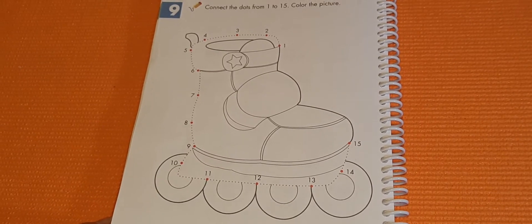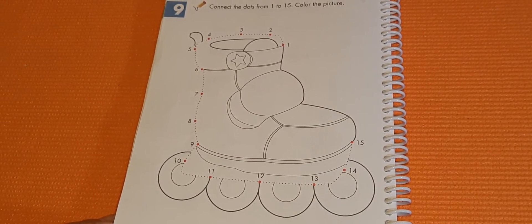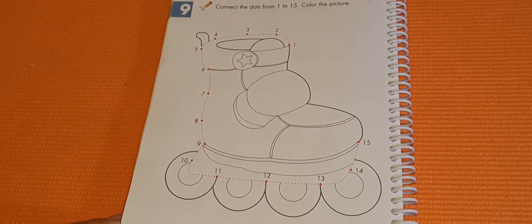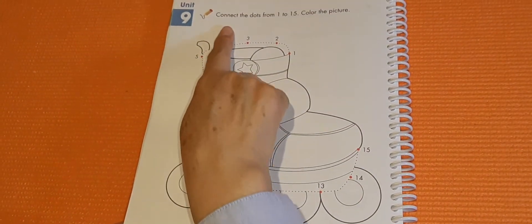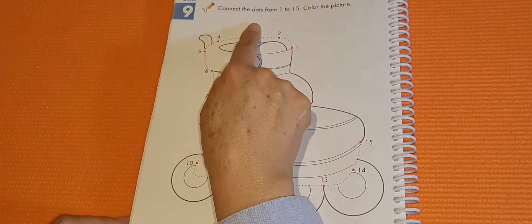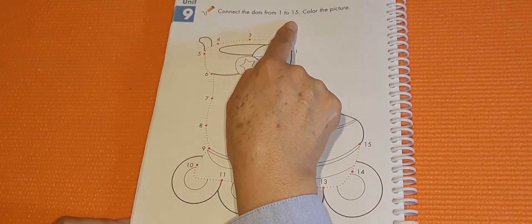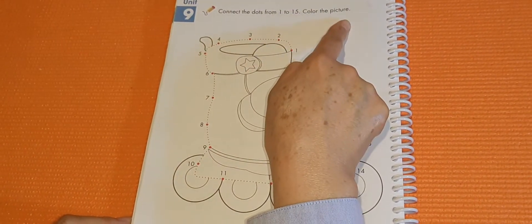Now, open your book on page 178. And read with me. Connect the dots from 1 to 15. Color the picture.